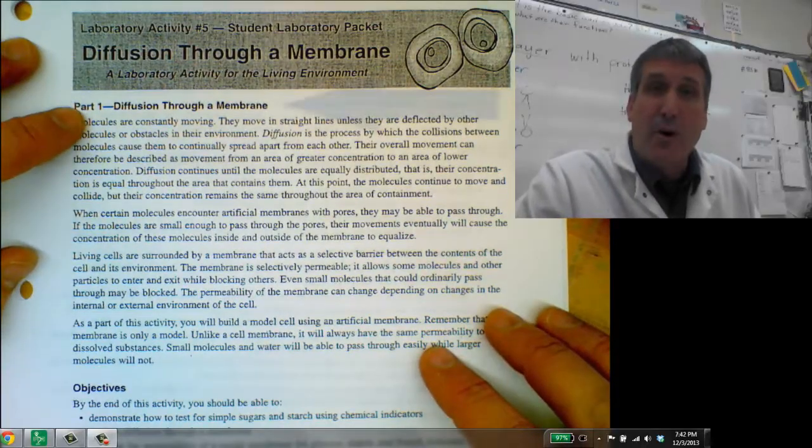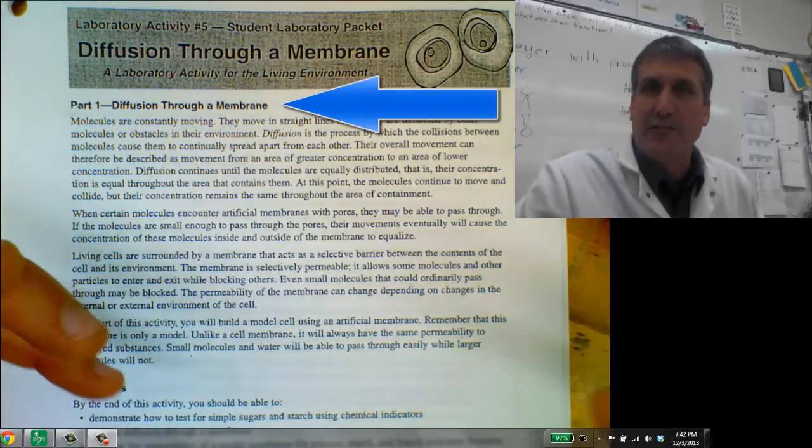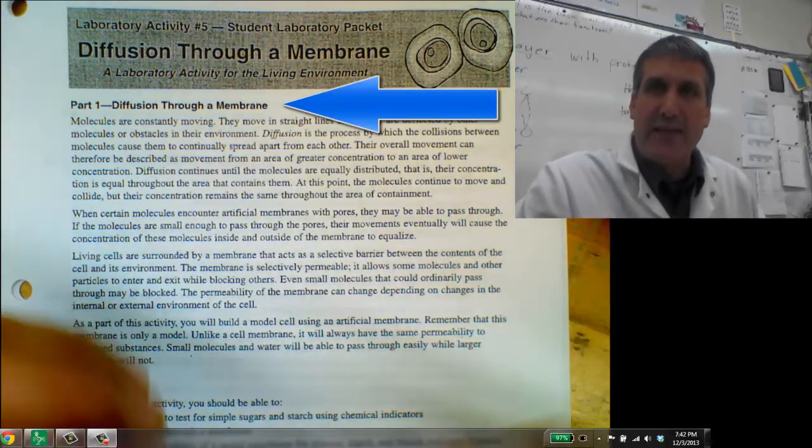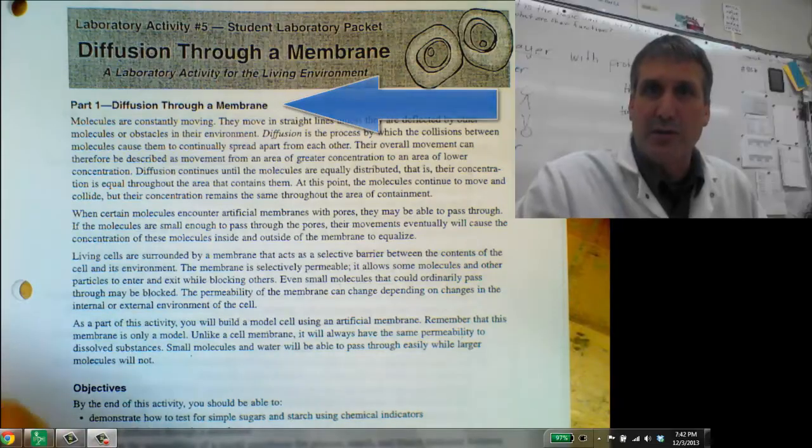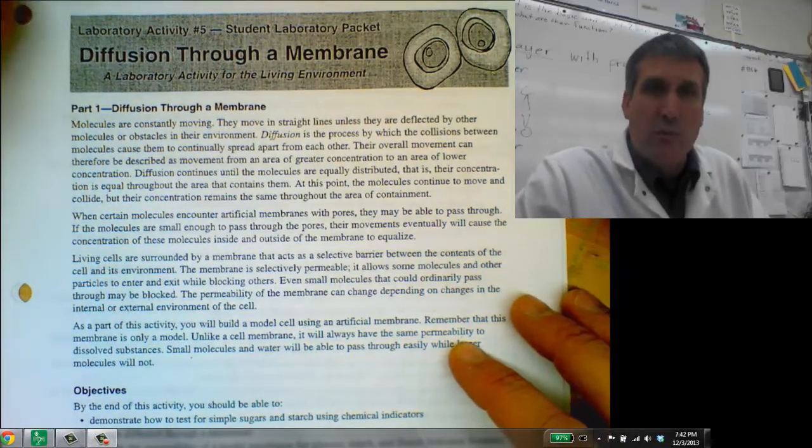We're going to talk about part one where we're going to build a model cell and create a bunch of different concentration gradients and then see which molecules are able to diffuse across the cell membrane and which ones maybe won't be able to.